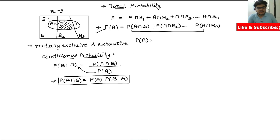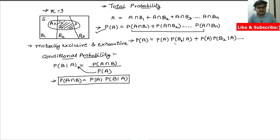The reason I'm doing this is to represent the total probability formula in the form of conditional probabilities. So probability of A equals probability of A times probability of B1 given A, plus probability of A times probability of B2 given A, and this goes on till Bn. So I have represented total probability using conditional probabilities.